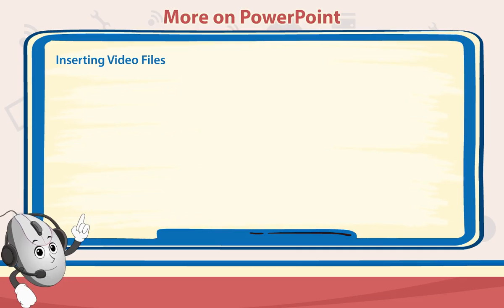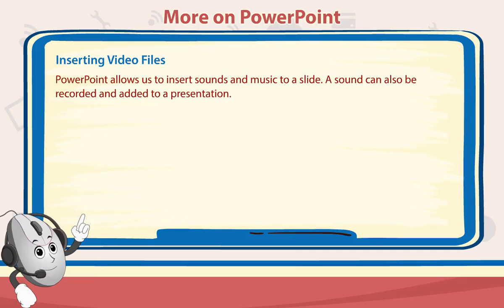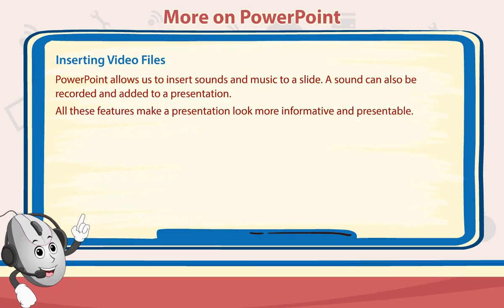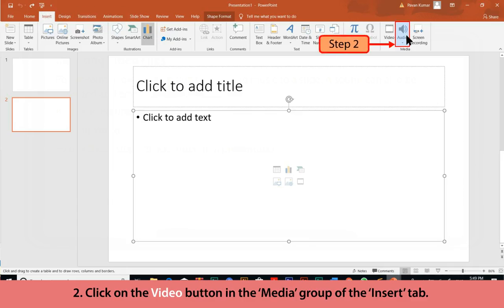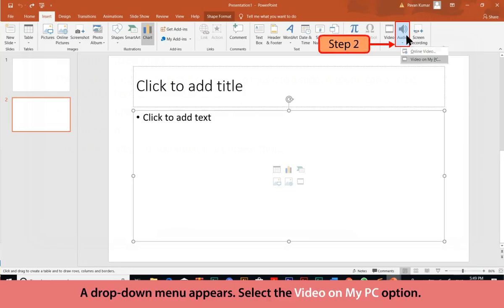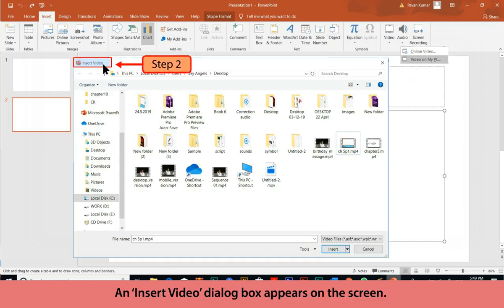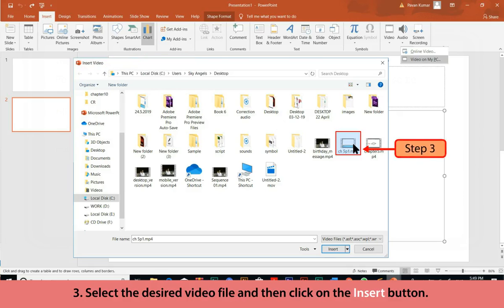Inserting Video Files: PowerPoint allows us to insert sounds and music to a slide. A sound can also be recorded and added to a presentation. Follow these steps to add a video: Click on the Insert tab, then click on the Video button in the Media group. A drop-down menu appears — select the Video on My PC option. An Insert Video dialog box appears. Select the desired video file and click the Insert button.